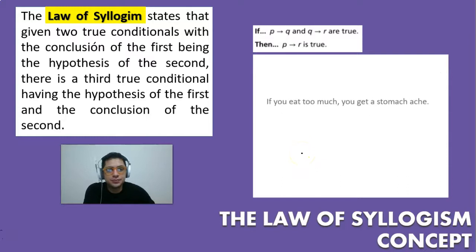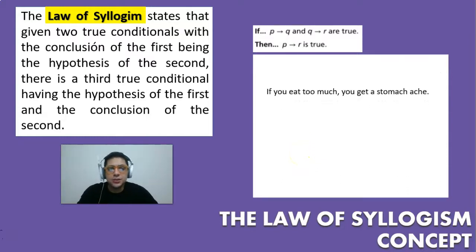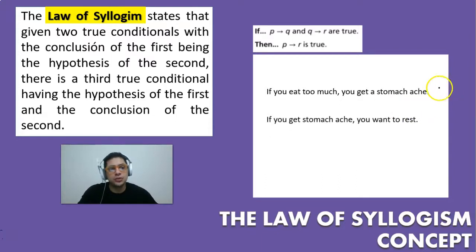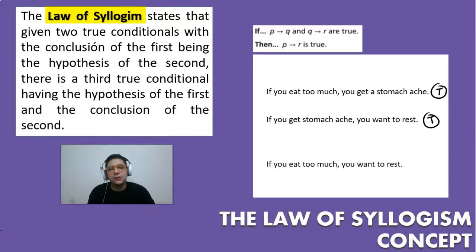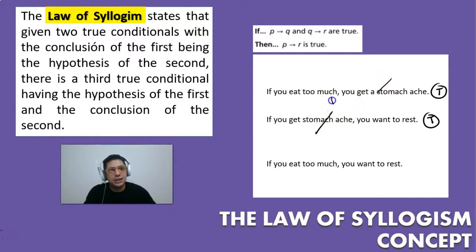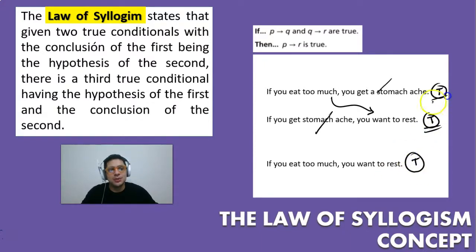Another example: if you eat too much, you get a stomach ache, and if you get a stomach ache, you want to rest — assume both are true. It's a chain of events, so that means if you eat too much, then you want to rest. This is the law of syllogism — you can skip the middle steps and go straight to the second conclusion.